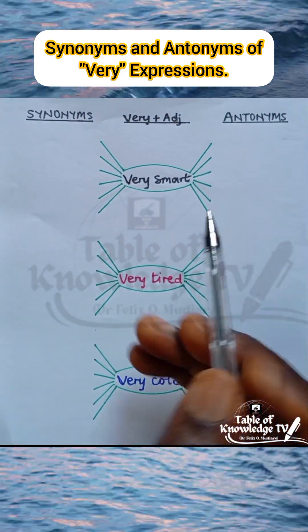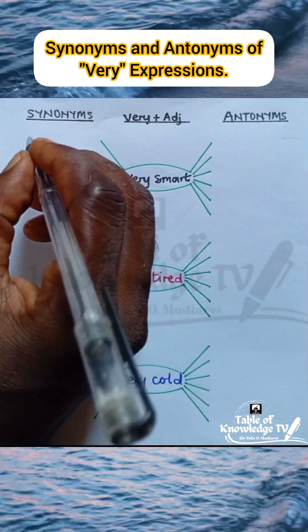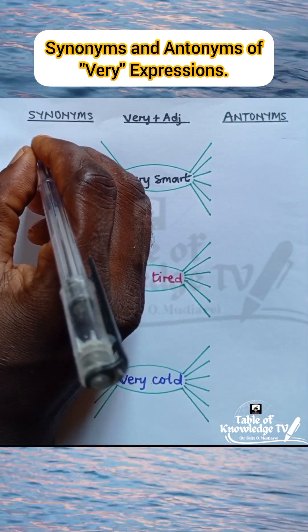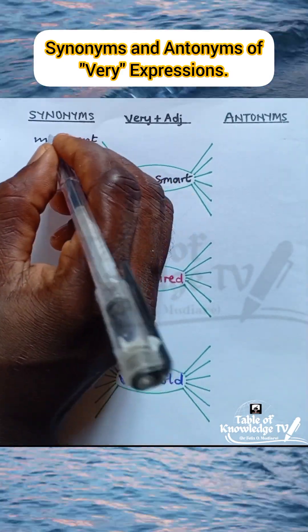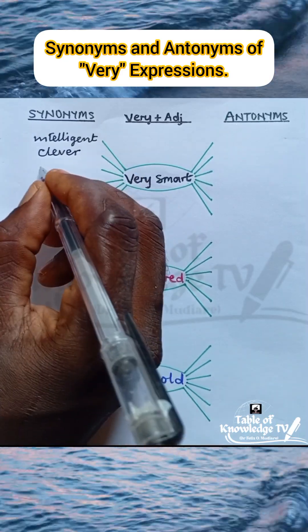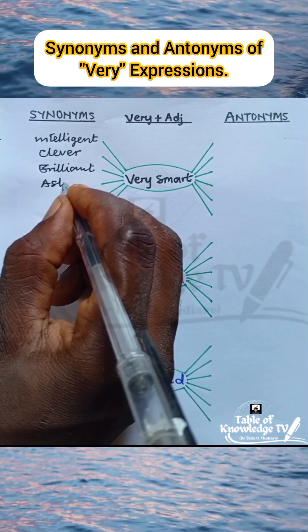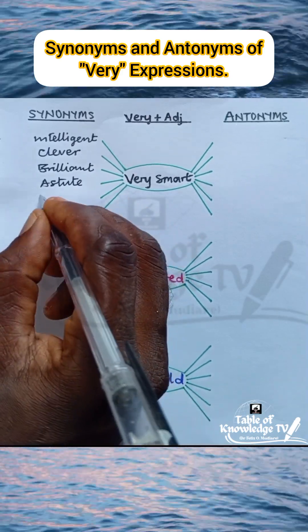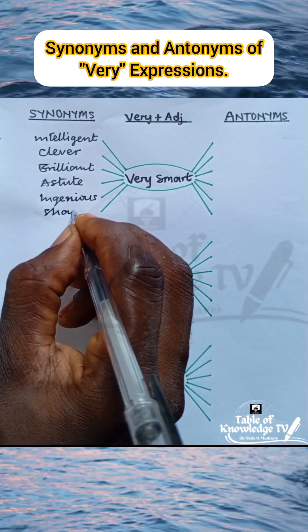Very smart. Let's look at the synonyms of very smart. These include intelligent, clever, brilliant, astute, ingenious, sharp.